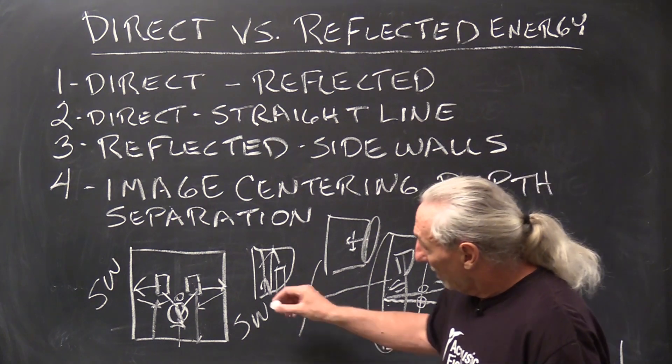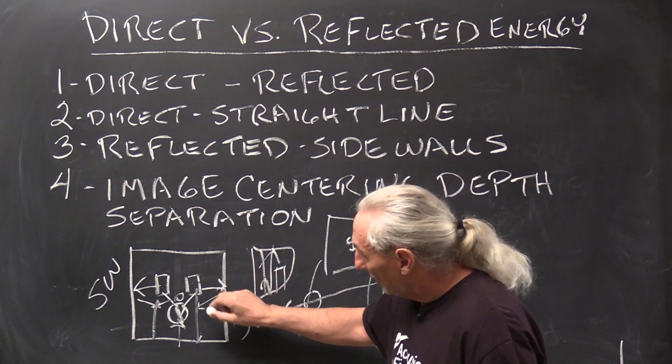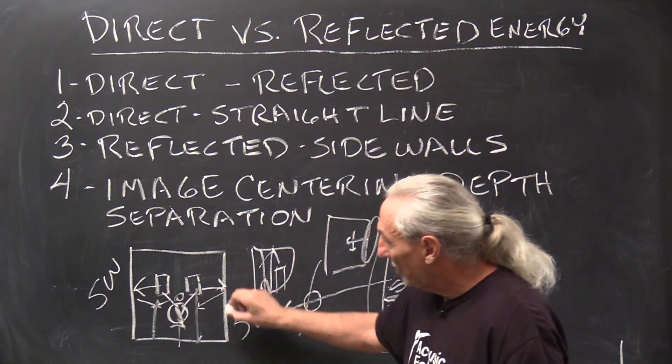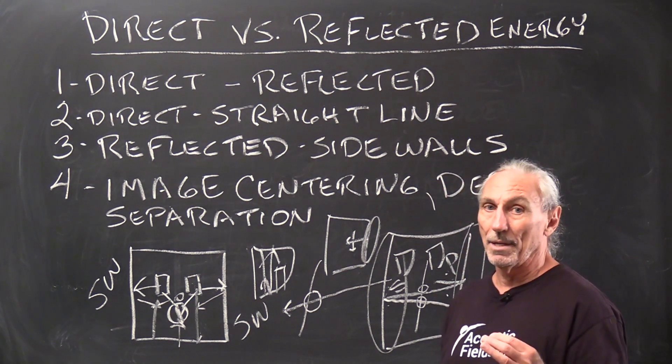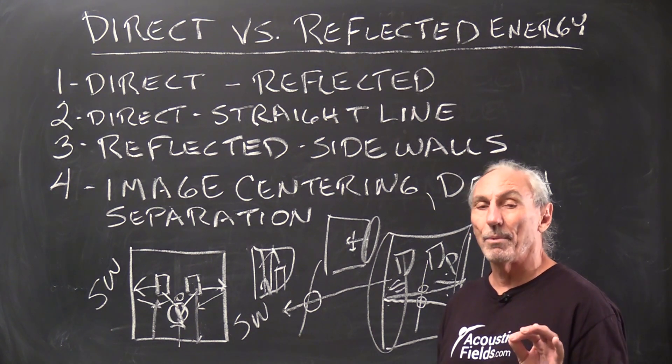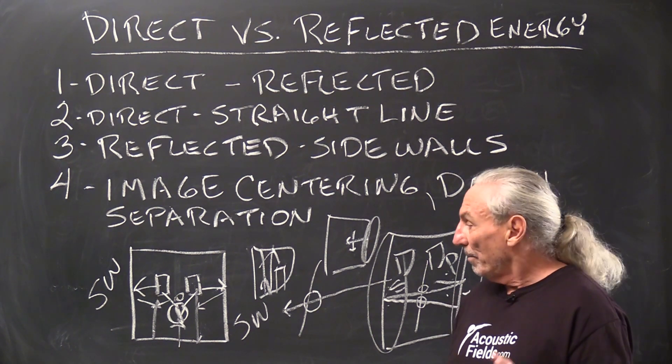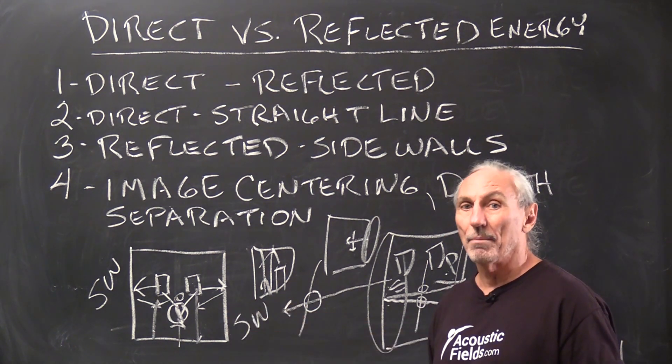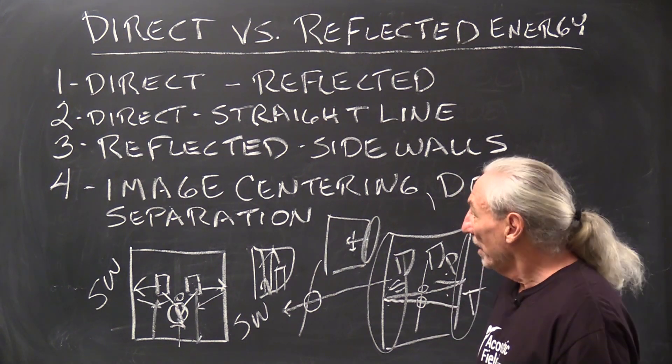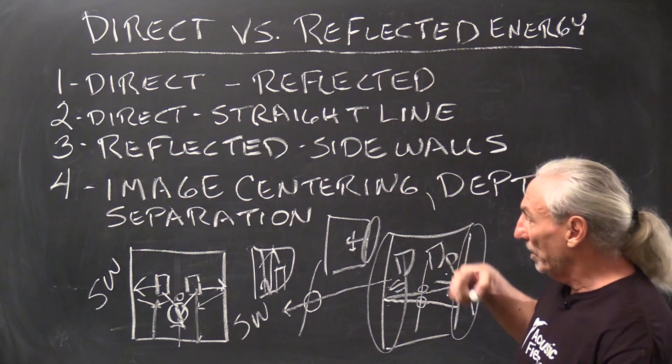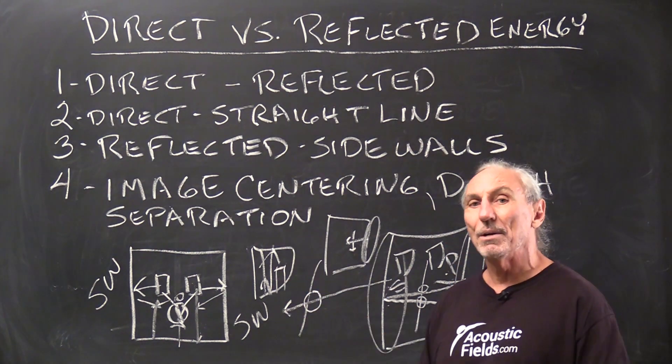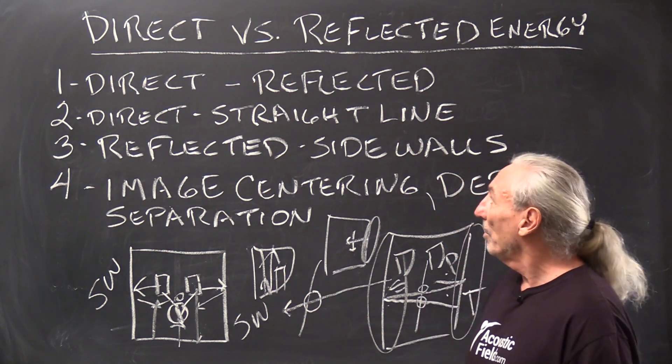So the side wall reflections, the secondary and the tertiary reflections, those three have to be controlled immediately in a room and they must be controlled with the proper rate and level of absorption. We've got to match everything and make it work together so that we have our image, we have good centering, we have good depth in our soundstage, and we can hear everything. So that's the goal.